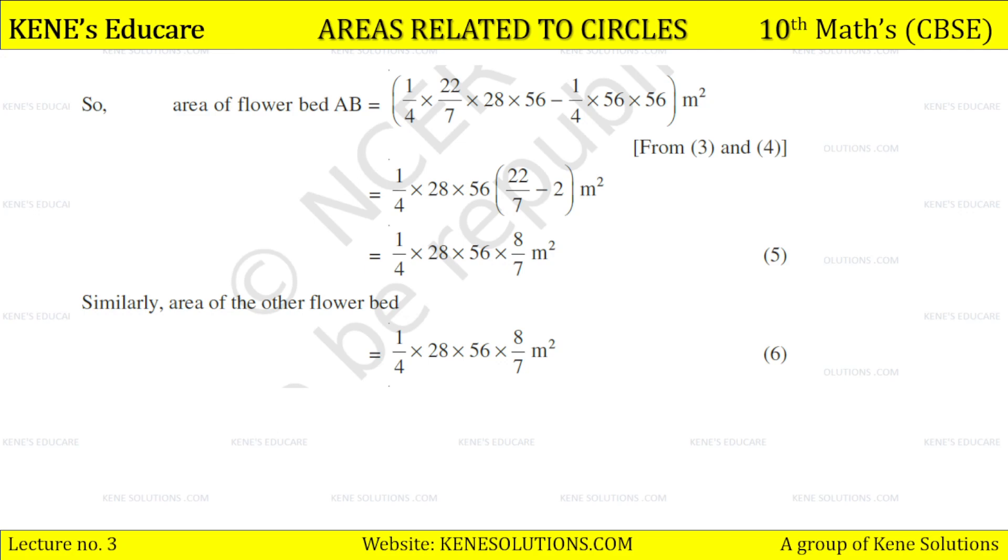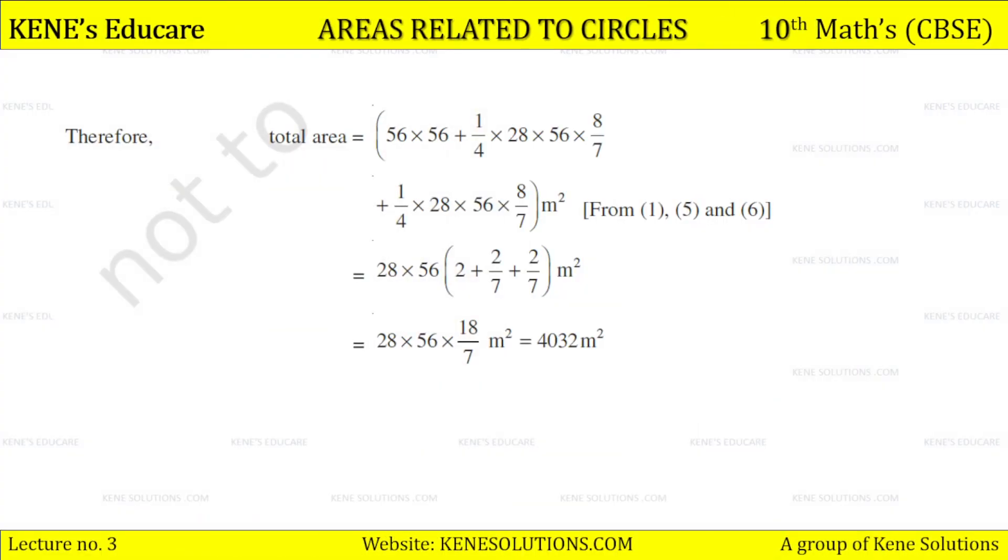Times 1/4 × 28 × 56 × 8/7. Similarly, area of the flower bed CD is equal to 1/4 × 28 × 56 × 8/7. So students, therefore total area = 56 × 56 + 1/4 × 28 × 56 × 8/7 + 1/4 × 28 × 56 × 8/7.